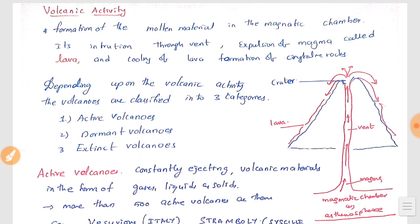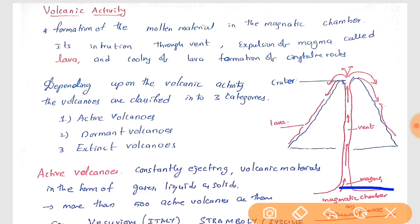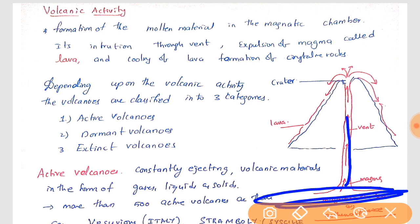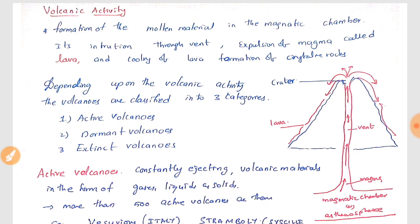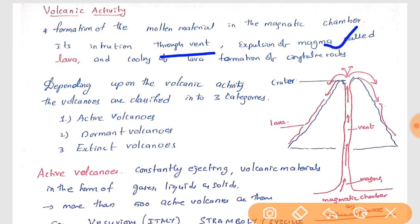Now we will see volcanic activity. The asthenosphere contains a magmatic chamber, which always finds the weakest part of the crust to break through. When it finds that weakest part, it comes out — this is called volcanic activity. The process involves formation of molten material in the magmatic chamber, its intrusion through a vent, expulsion of magma called lava, and cooling of lava to form crystalline rocks.